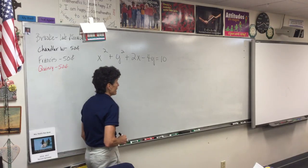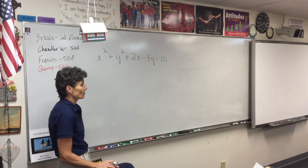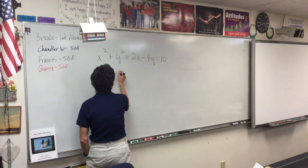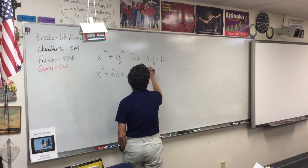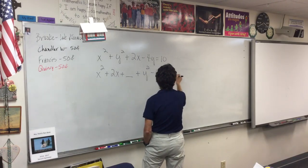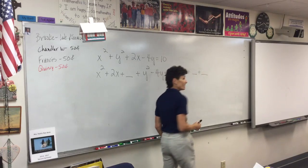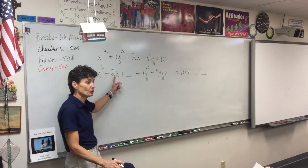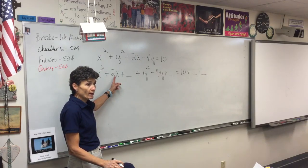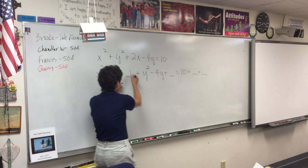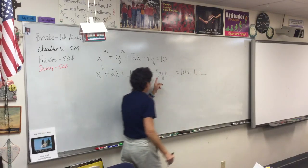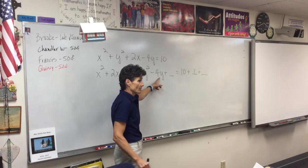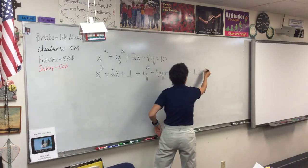This is a circle defined by the center and the radius. To do that, we group our x's together and our y's together. Now we're going to complete the square. Half of 2 is 1, squared is 1 — added on both sides. Half of 4 is 2, squared is 4 — added to both sides.